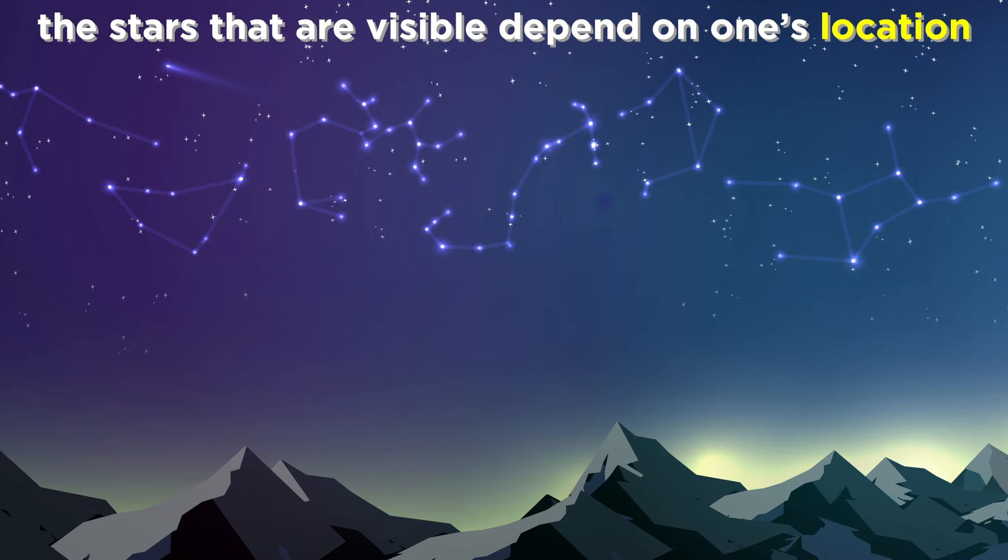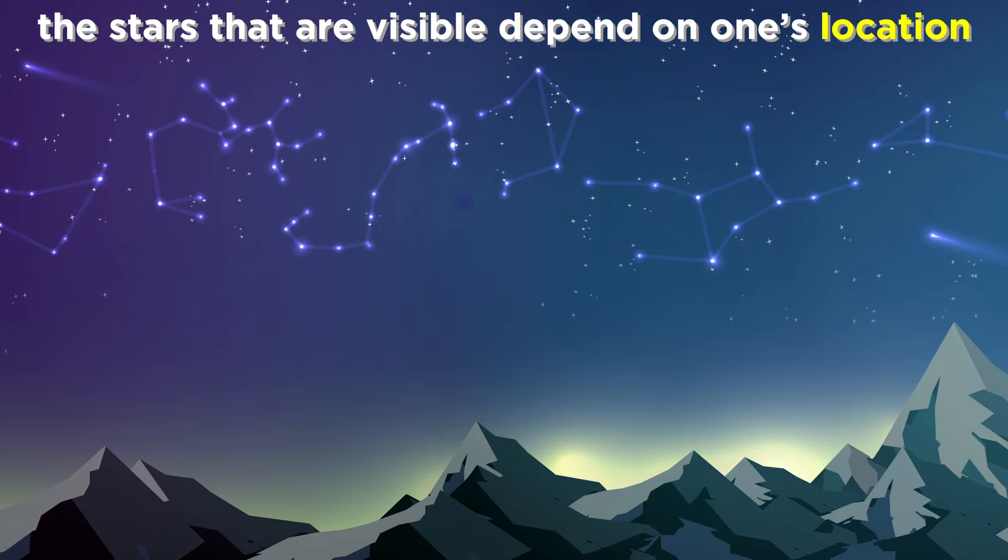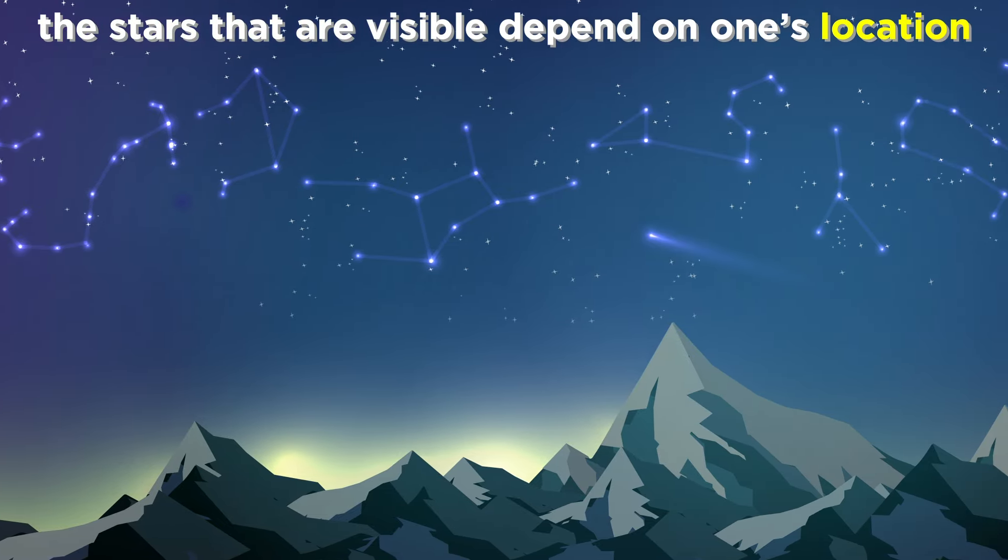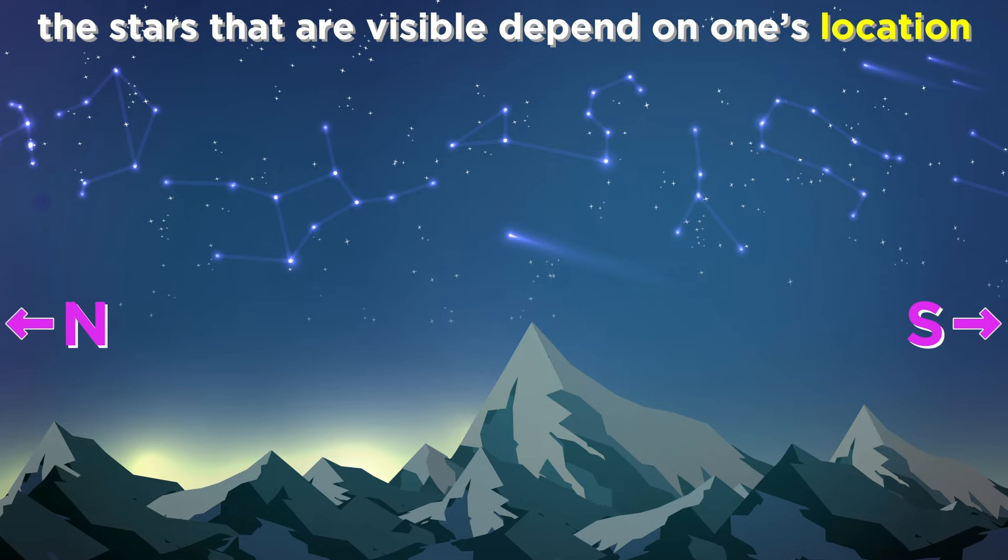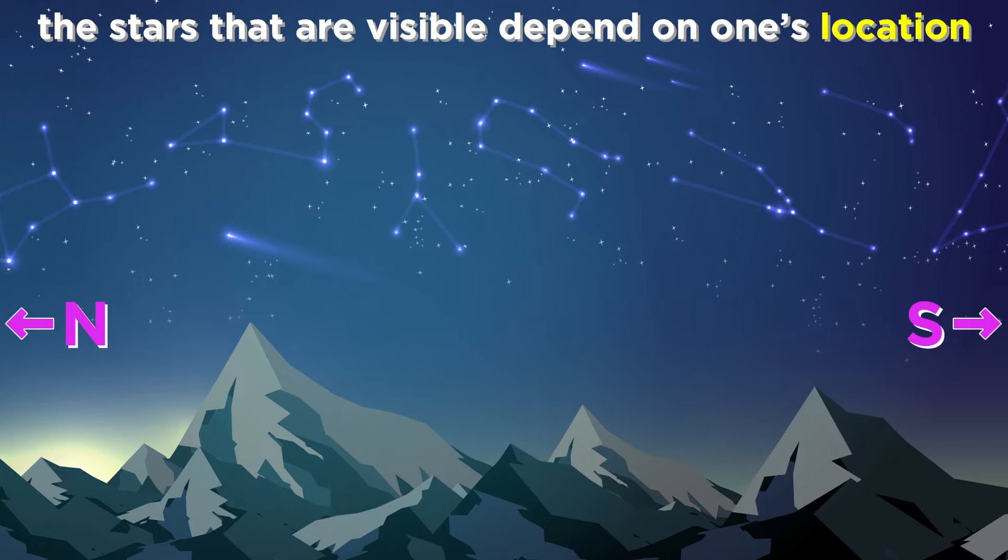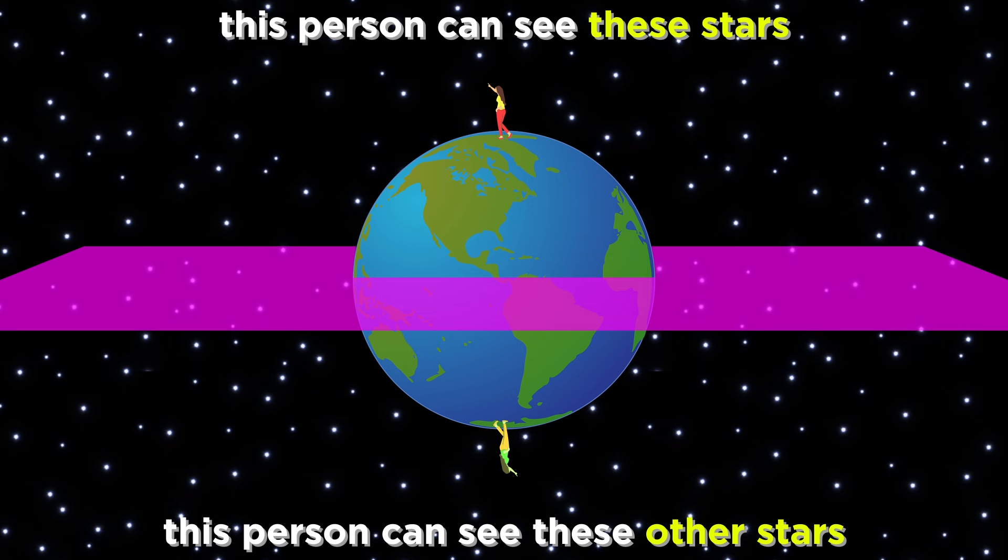It was also realized that the stars that are visible in the night sky depended entirely on one's location in the world. Moving north to south, a completely new set of stars becomes visible, and all the familiar ones vanish from sight. This is easily explained with a round earth, as the other half of space that surrounds the earth is only visible to the other half of the earth.